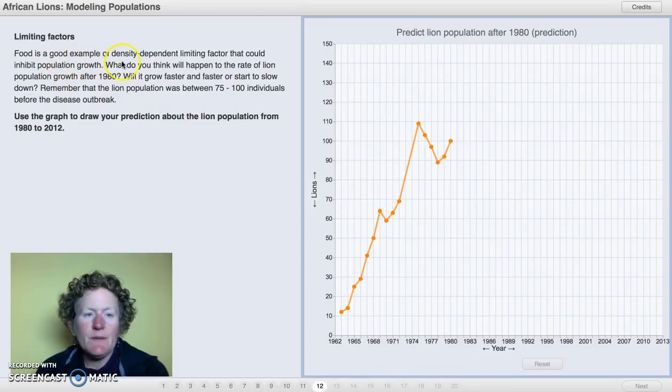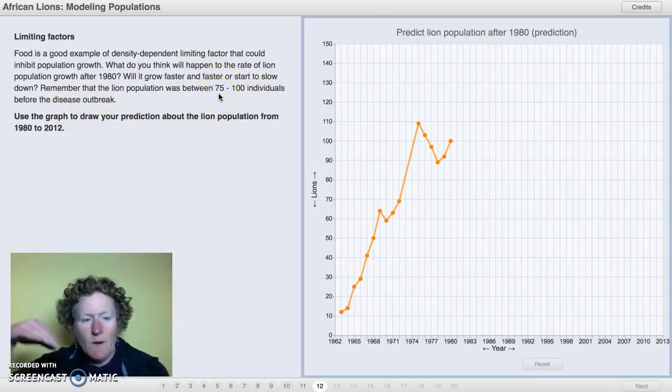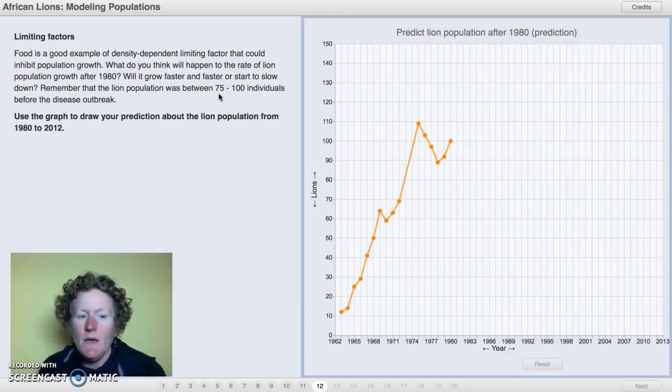Food is a good example of density-dependent limiting factor that could inhibit population growth. What do you think will happen to the rate of lion population after 1980? Will it grow faster and faster, or start to slow down? Remember that the lion population was between 75 to 100 individuals before the disease outbreak. When we know about where the population hovers, what do we call that when we watched that second video? Take a minute to think.